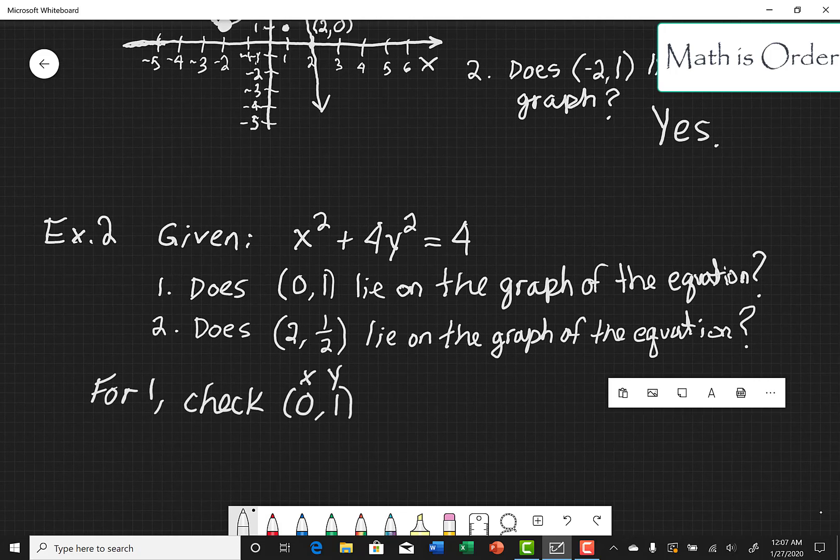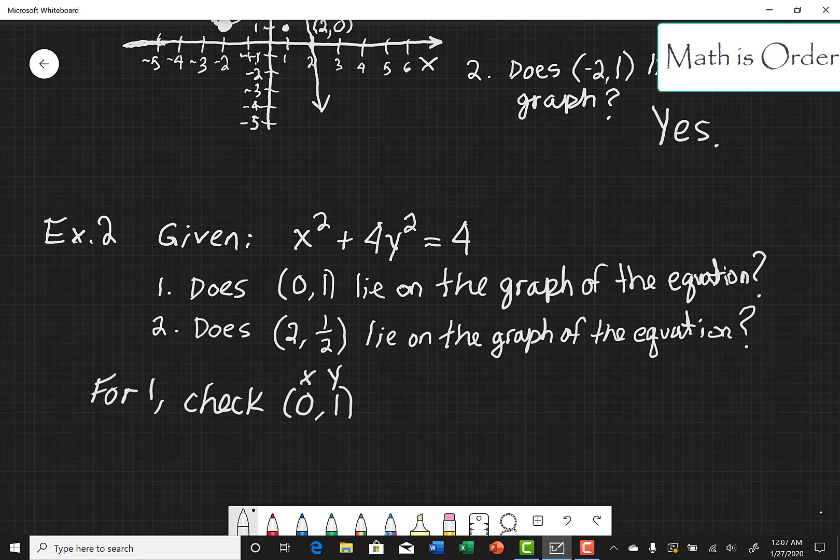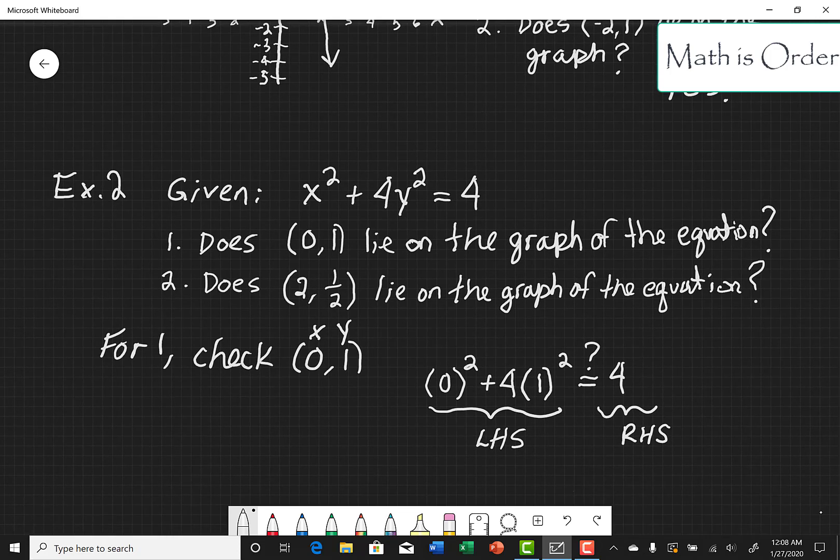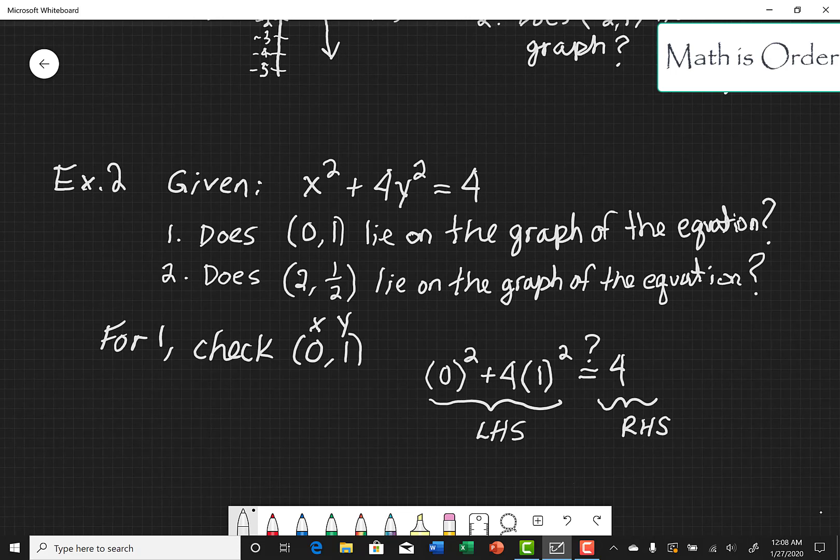If it is, then the point does lie on the graph. For 1, let's check. So everywhere I see x I'm going to put 0 and everywhere I see y in the equation I'm going to put 1. In this case 0 squared is 0, 1 squared is 1.